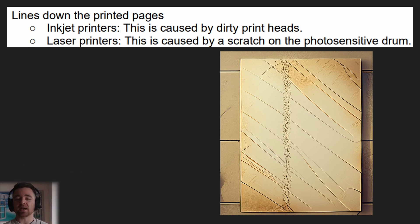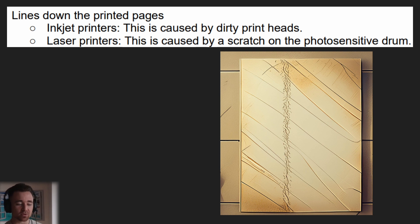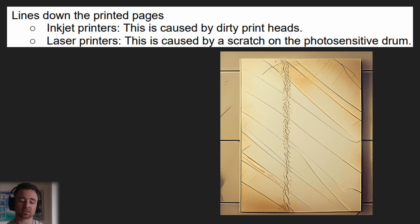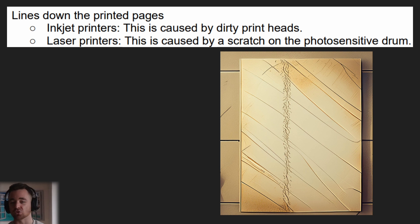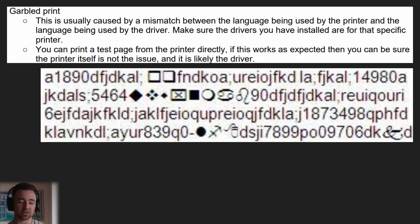Lines down the printed page. If you've got a printer with lines coming down your page, what could be causing this? If it's an inkjet printer, it's going to be caused by dirty print heads — they're causing lines to scratch down the page. If it's a laser printer, it's going to be caused by a scratch on the photosensitive drum, because the toner isn't sticking where that scratch is, so you're going to have no toner coming down that page.